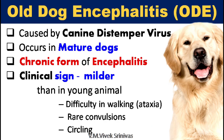Old dog encephalitis: This is a chronic form of encephalitis caused by canine distemper virus in mature dogs. The clinical signs are milder than in young animals. Some of the symptoms like difficulty in walking, rare convulsions, and circling are noticed.